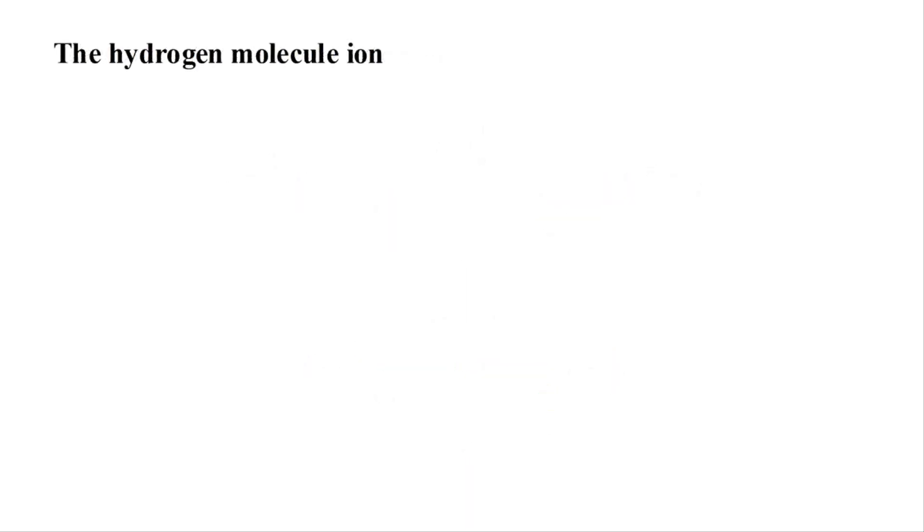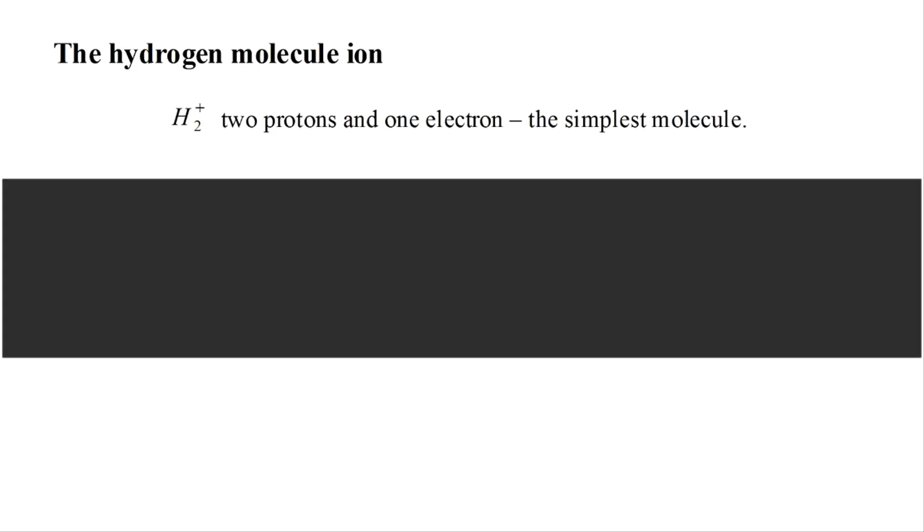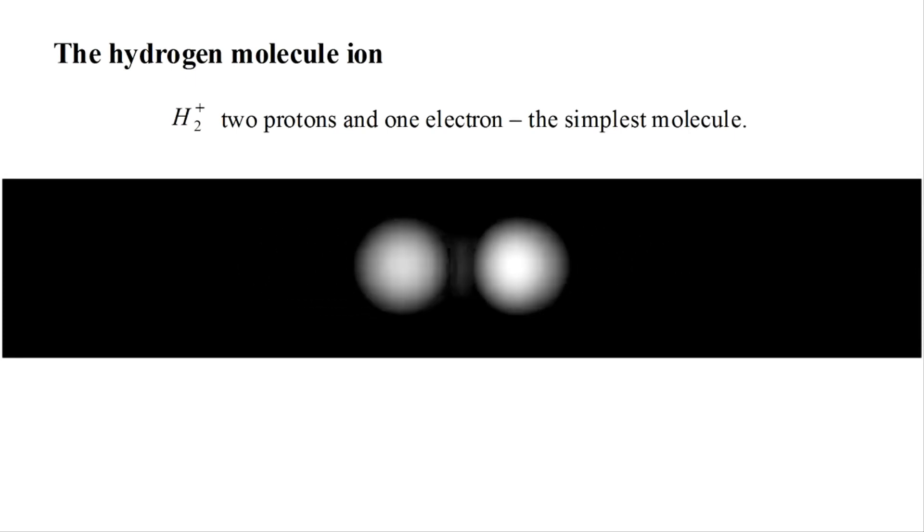The first molecule to be analyzed using quantum mechanics was the hydrogen molecule ion. This is denoted H2+ and contains two protons and one electron. With two nuclei and a single electron, it's the simplest of all molecules. We can imagine two hydrogen atoms coming together to form a hydrogen molecule, followed by one of the two electrons being removed through impact, radiation, or some other process.